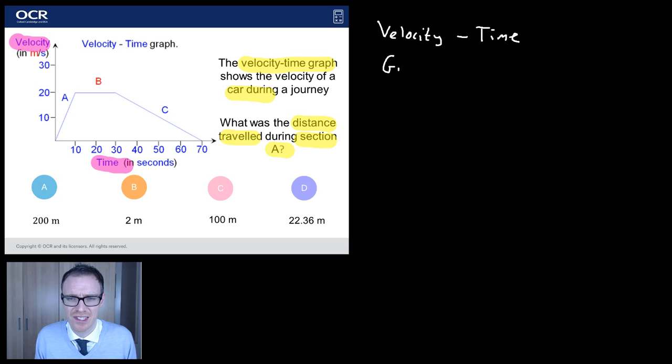The first thing is this. The gradient of a velocity time graph, so the slope of the line, what does that tell you? Do you know this? That tells you the acceleration. And I'm going to try and do a video later on in the series that looks at that because I'm pretty sure something like that's coming up. It's brand new to GCSE.